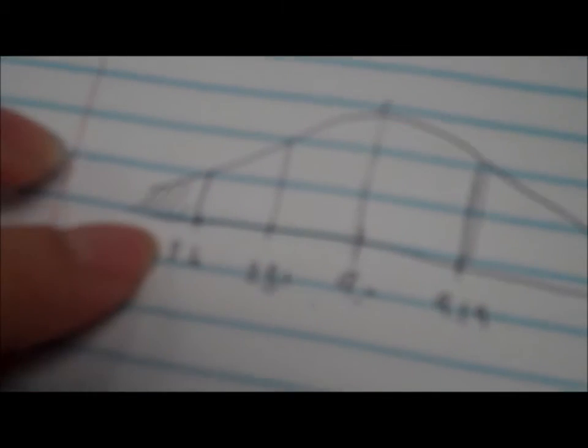So z value formula is 8.81 minus 8.6 divided by 0.8 divided by root 50. So it's 1.86. 1.86 is gonna be 0.4686. But z is greater than 1.86, so we have to know this area. So 0.5 minus 0.4686, the answer is 0.0314.